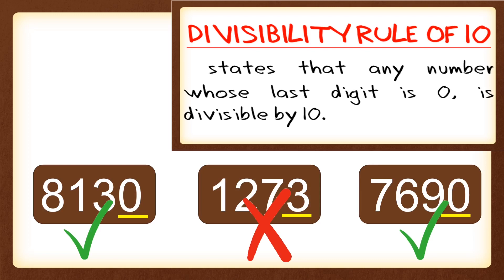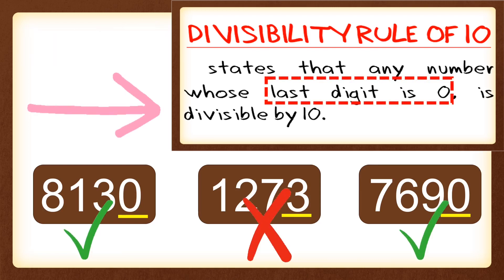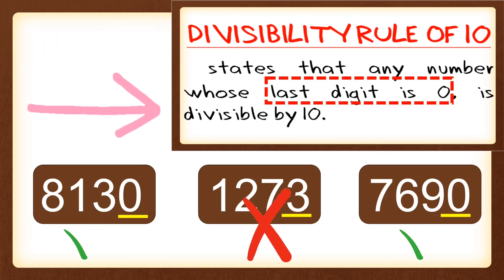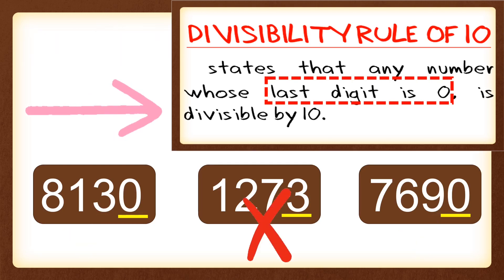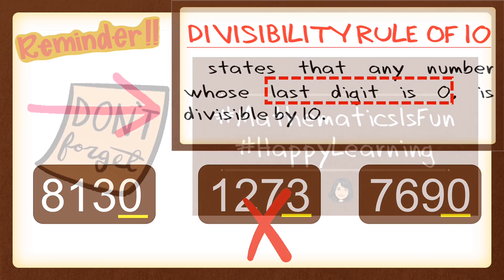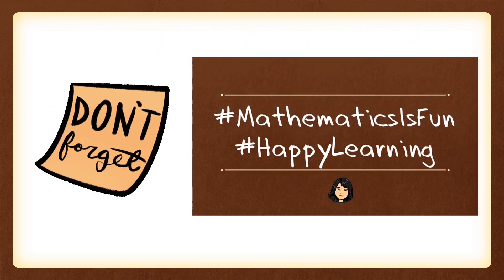So it's just as easy as that. As a reminder, for the divisibility rule of 10, just look at the last digit: if it is 0, the number is divisible by 10; if not, it is not divisible by 10. So don't forget — happy learning!